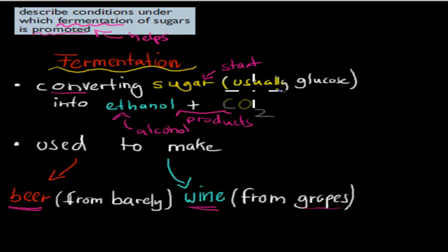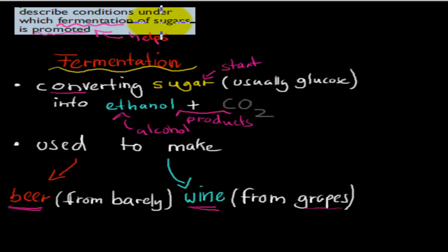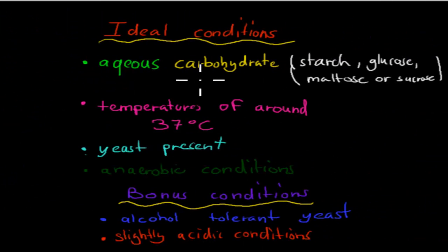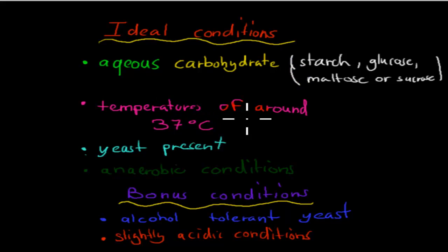The document says: describe conditions under which fermentation of sugars is promoted. So what conditions make the fermentation of sugar go better or faster? The ideal conditions are: aqueous carbohydrates, temperatures around 37 degrees Celsius, yeast present, and anaerobic conditions.